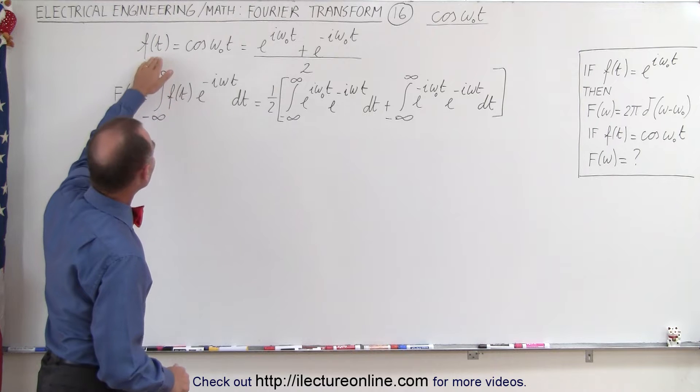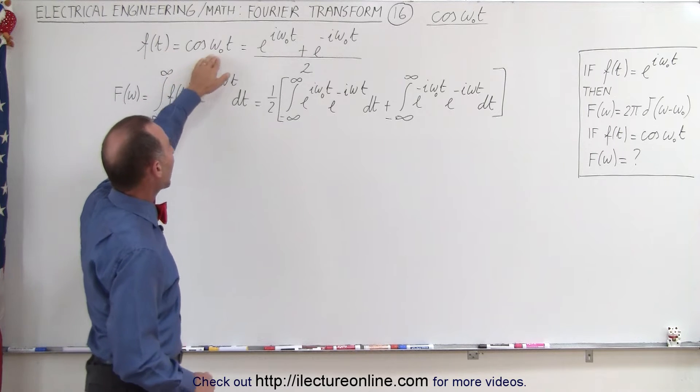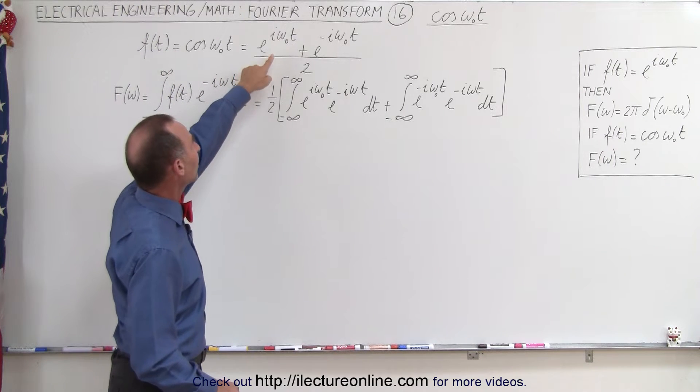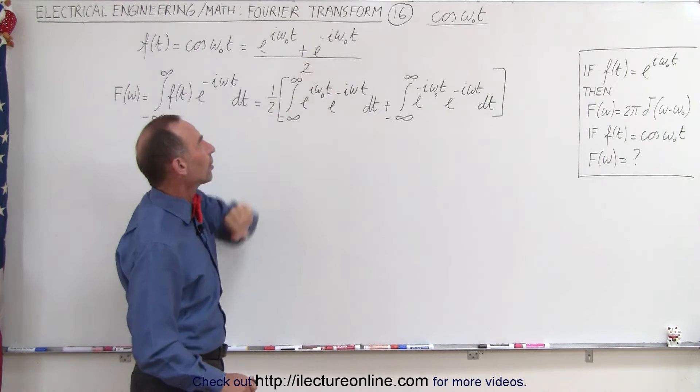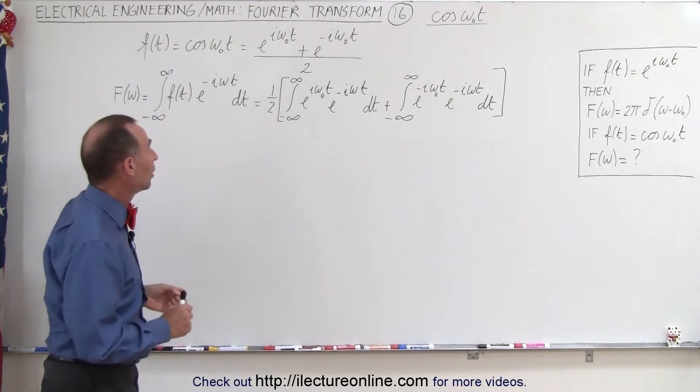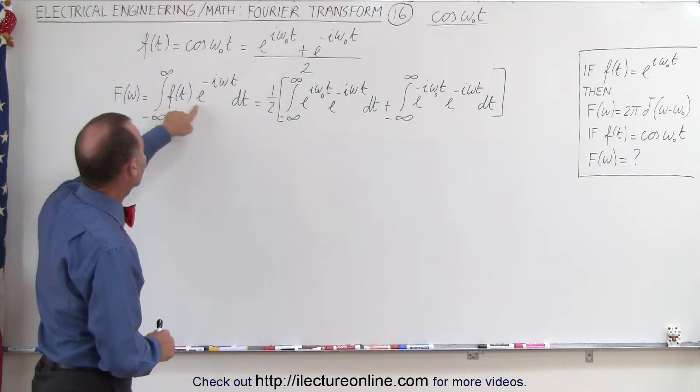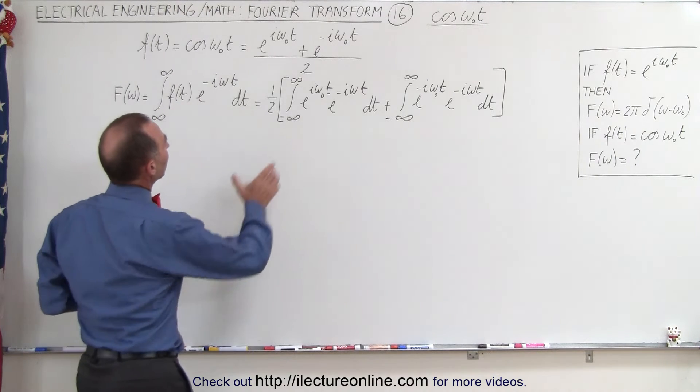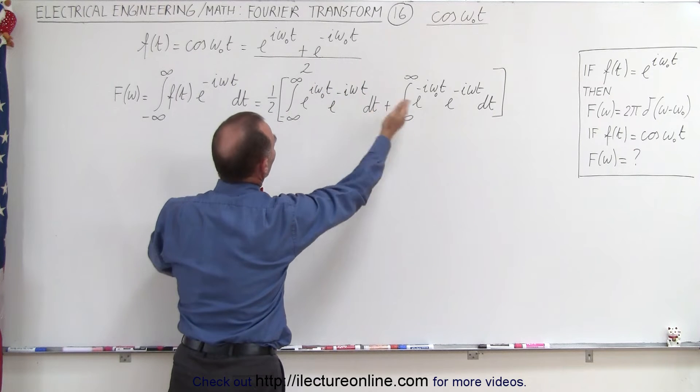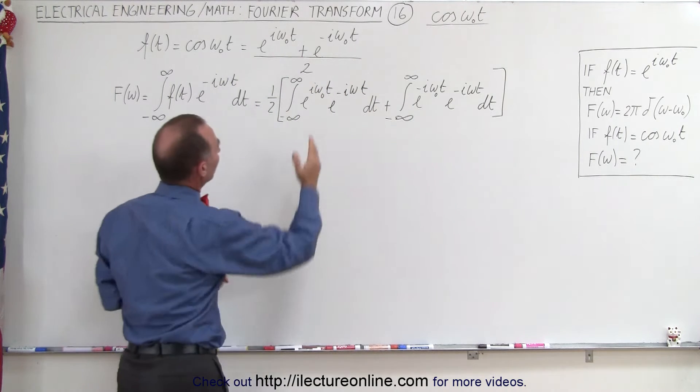We can write cos(ωt) as the expansion (e^(iωt) + e^(-iωt))/2. We can then find the Fourier transform by replacing f(t) in the equation with this quantity and expanding it to two separate integrals because of the plus sign.